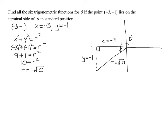I'll start with the major three: sine, cosine, and tangent. The sine of theta is defined as y over r. Y is negative 1 and r is the square root of 10, so sine of theta equals negative 1 over the square root of 10. In this problem we're not asked to rationalize the denominator, so we can leave it as is.